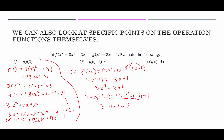So the difference function at −1 equals 5. We can verify by plugging −1 into f and g separately: f(−1) = 3(1) + 2(−1) = 3 − 2 = 1, and g(−1) = 3(−1) − 1 = −4. Then f(−1) − g(−1) = 1 − (−4) = 5. Either way, we get 5.